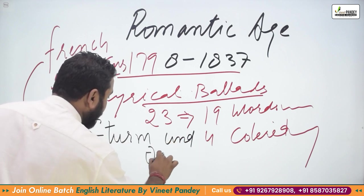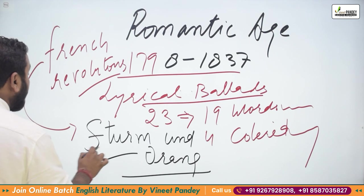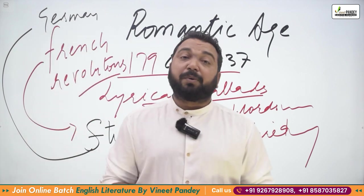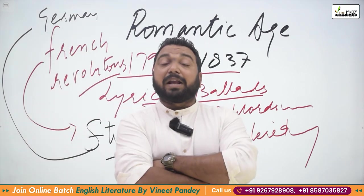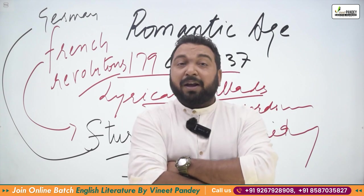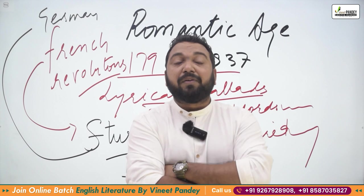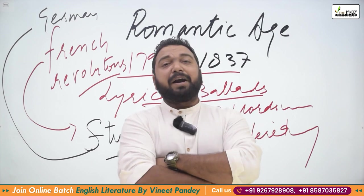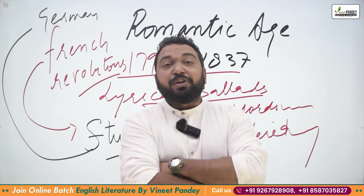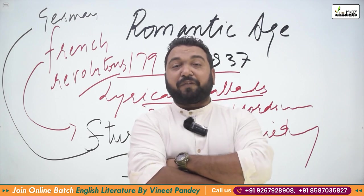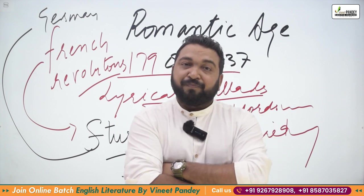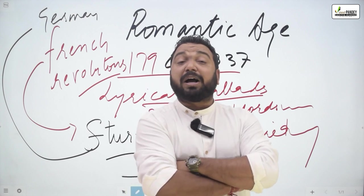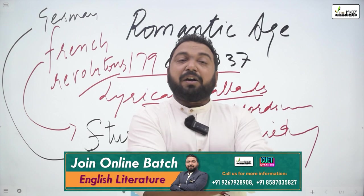The Sturm und Drang movement was a German philosophical and Romantic movement. There are exam questions about which writers heavily inspired the English Romantics — writers like Coleridge, Emmanuel Kant, and Schiller inspired Romantic writers. Europeans were going through a transition phase in philosophy; Pre-Romanticism was a movement toward nature, but Romanticism was highly romanticized.